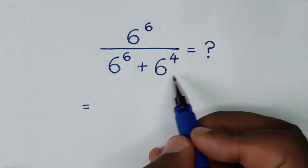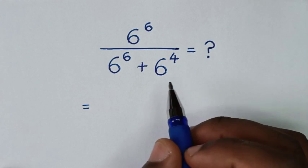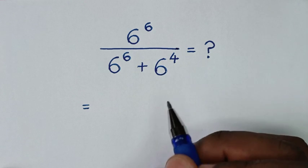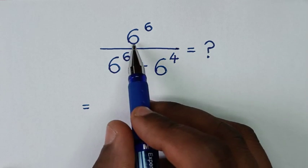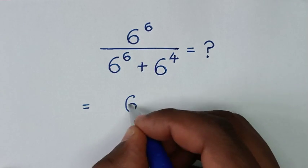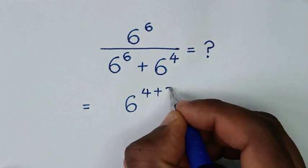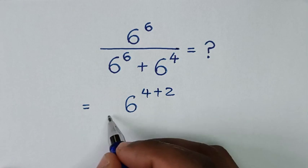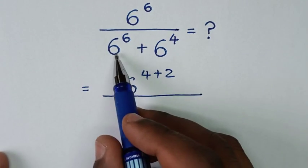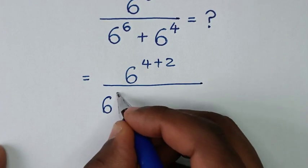From here, 6 power 4 is the smallest exponent, so we'll make 6 power 4 common. Now, 6 power 6 is the same as 6 power 4 plus 2.